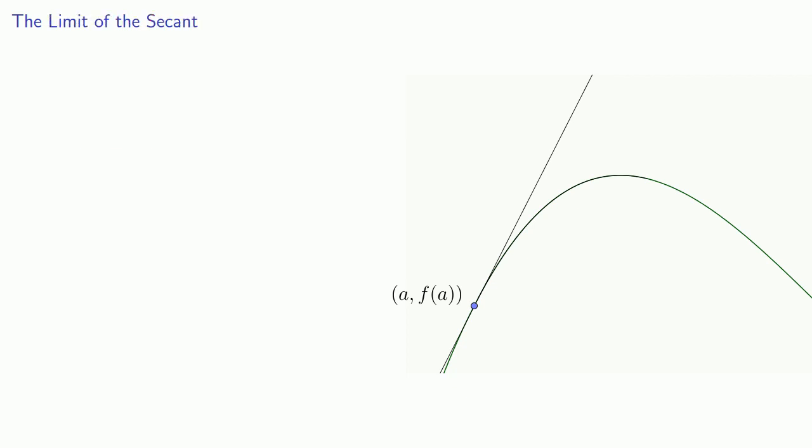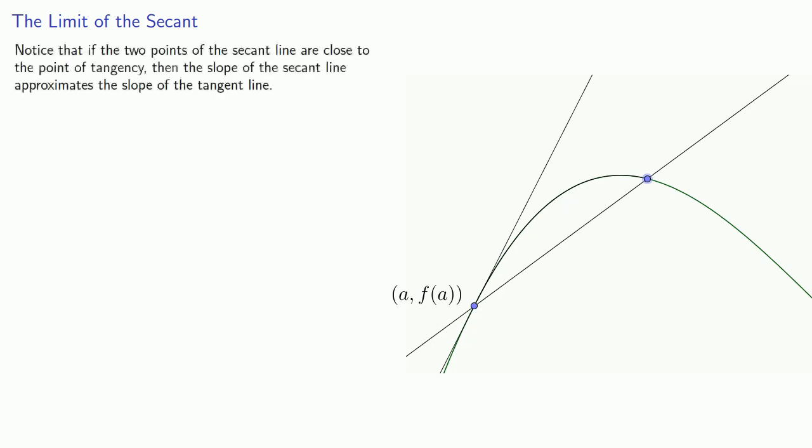Let's go back to the secant line. Remember the secant line runs between two points on the curve. Notice that if the two points of the secant line are close to the point of tangency, then the slope of the secant line approximates the slope of the tangent line. And this suggests the following approach.